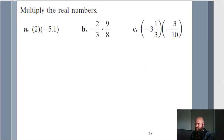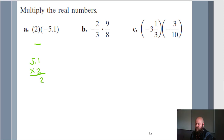Let's do a couple of problems. For A, we have positive 2 multiplied times negative 5.1. By our second rule, a positive and a negative gives us a negative answer. We know the answer is automatically negative. Multiplying out: 2 times 1 is 2, and 2 times 5 is 10 — put a decimal over one spot — giving us 10.2. So the answer is negative 10.2.